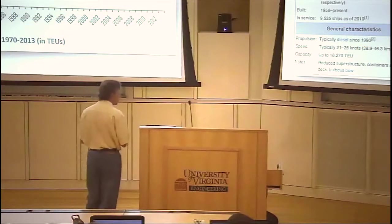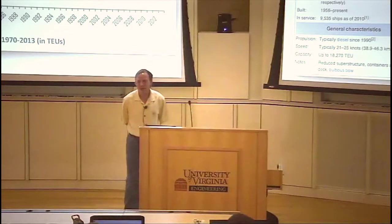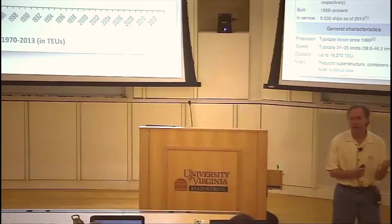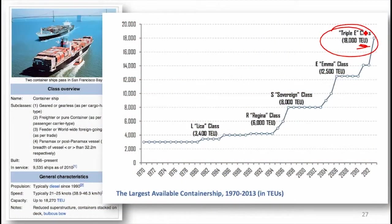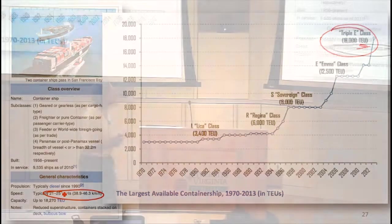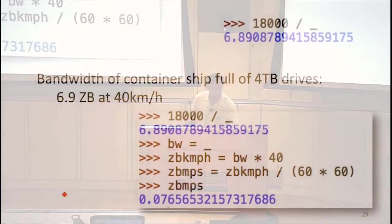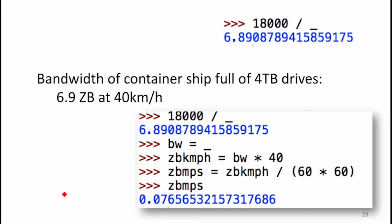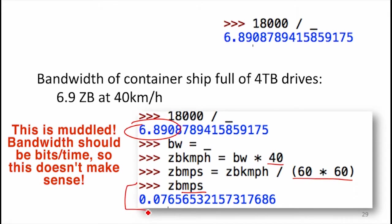So what's the bandwidth? Do we know everything we need to figure it out? We also need to know the speed it's traveling at — about 20 knots, which is about 40 kilometers per hour. So we take the number of zettabytes on the ship, with 18,000 containers, needing about 2,000 containers per zettabyte, and convert distance into meters per second. Our container ship bandwidth is 0.07 zettabyte meters per second.